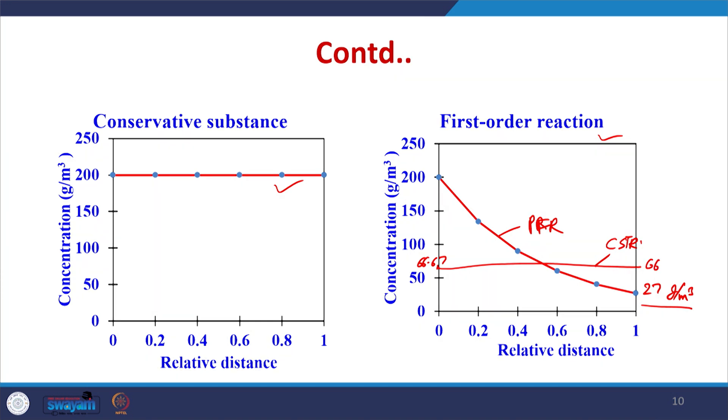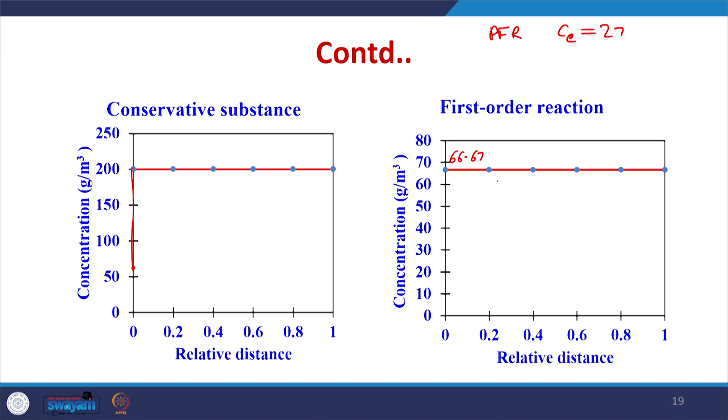This comparison shows that plug flow reactors under ideal conditions have better efficiency compared to a simple CSTR. That means if we can design reactors which have a flow pattern similar to a plug flow reactor, for the same volume we can achieve better efficiency. This is an important consideration during reactor design.